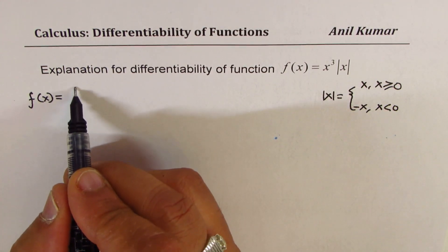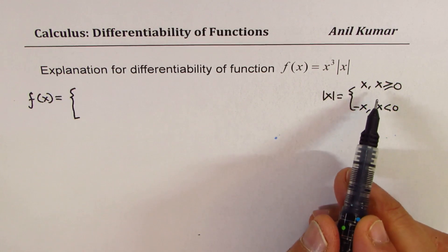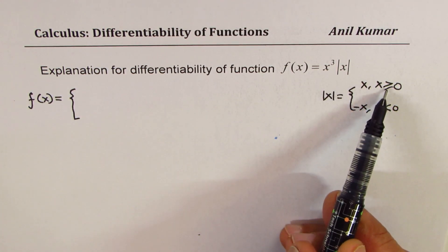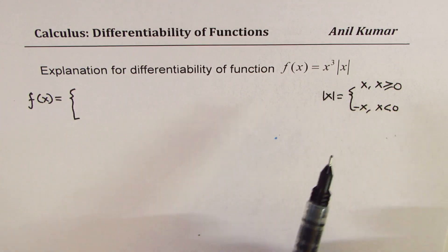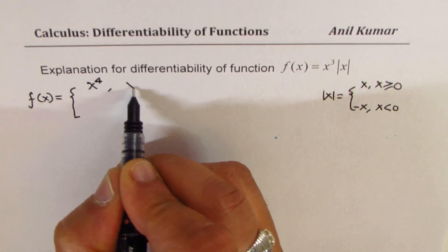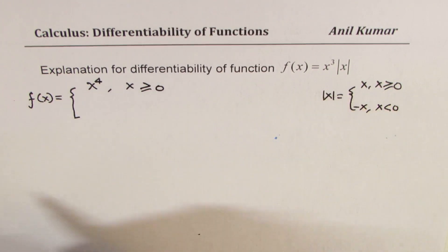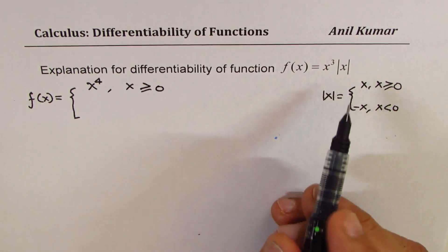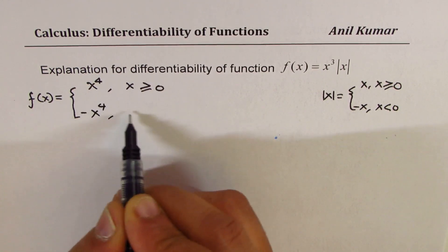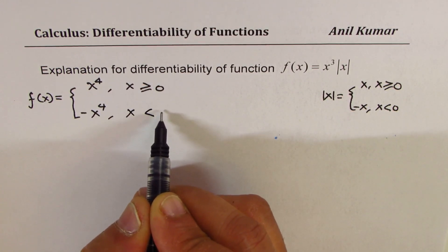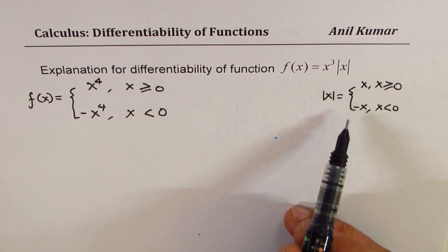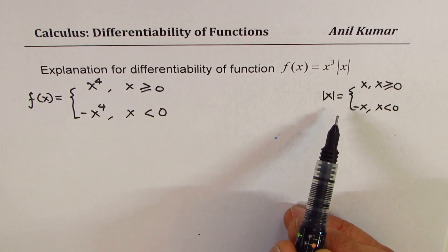That means I can write the function as a piecewise function: it is x to the power of 4 when x is greater than or equal to 0, and minus x to the power of 4 when x is less than 0, since that is how absolute value of x is defined.